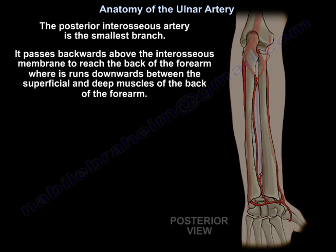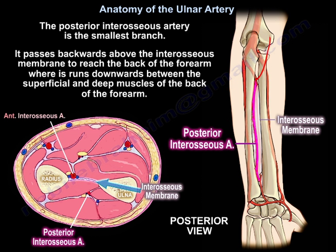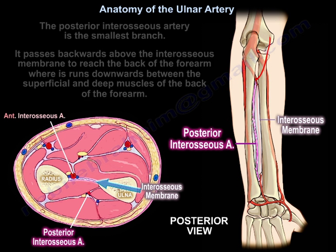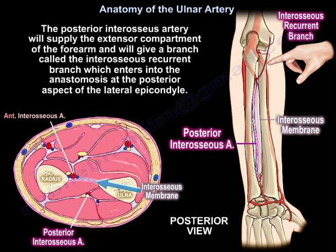The posterior interosseous artery is the smallest branch. It passes backwards above the interosseous membrane to reach the back of the forearm, where it runs downwards between the superficial and deep muscles of the back of the forearm. It supplies the extensor compartment of the forearm and gives a branch called the interosseous recurrent branch, which enters into the anastomosis at the posterior aspect of the lateral epicondyle.